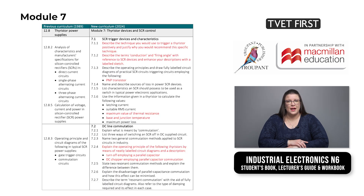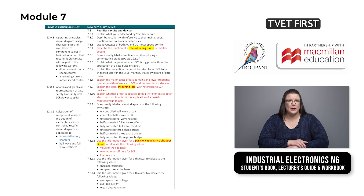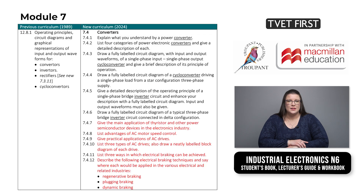Module 7 covers thyristor and SCR speed control. This module introduces and explains important terminology such as firing angle, thermal resistance and base and junction temperature in section 7.1, and parallel capacitors and DC choppers in section 7.2. Section 7.3 covers free wheeling diodes, switching loss, heat sinks and a parallel capacitance chopper. Section 7.4 includes AC drives and electrical braking techniques such as regenerative braking, plugging braking and dynamic braking. Industrial battery chargers do not appear in the 2025 curriculum.